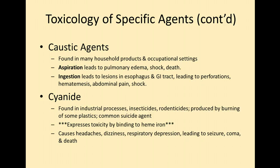The next one is cyanide. This can be found in industrial processes, insecticides, rodenticides, and produced by burning some plastics. It can also be a suicide agent. It's very toxic because it binds to heme iron. It causes headaches, dizziness, respiratory depression, leading to seizure, coma, and death.